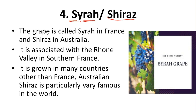The next grape variety is Syrah or Shiraz. The grape is called Syrah in France and Shiraz in Australia — the same variety, two different names. It is associated with the Rhône Valley in southern France, where it originated. Australian Shiraz is particularly very famous in the world, with Australia growing some very well-known Shiraz wines.